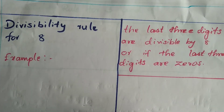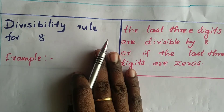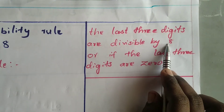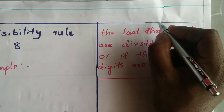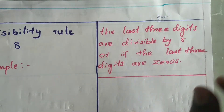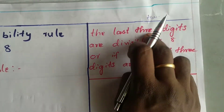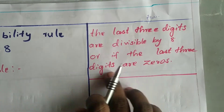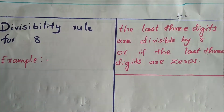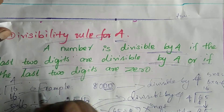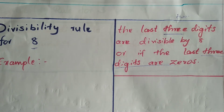In the divisibility rule for 4, more examples are in your textbooks — please work those out. Now we move to the divisibility rule for 8. If the last 3 digits are divisible by 8, or if the last 3 digits are 0, then the number is divisible by 8. Note the slight difference: for 4 it's the last 2 digits; for 8 it's the last 3 digits.